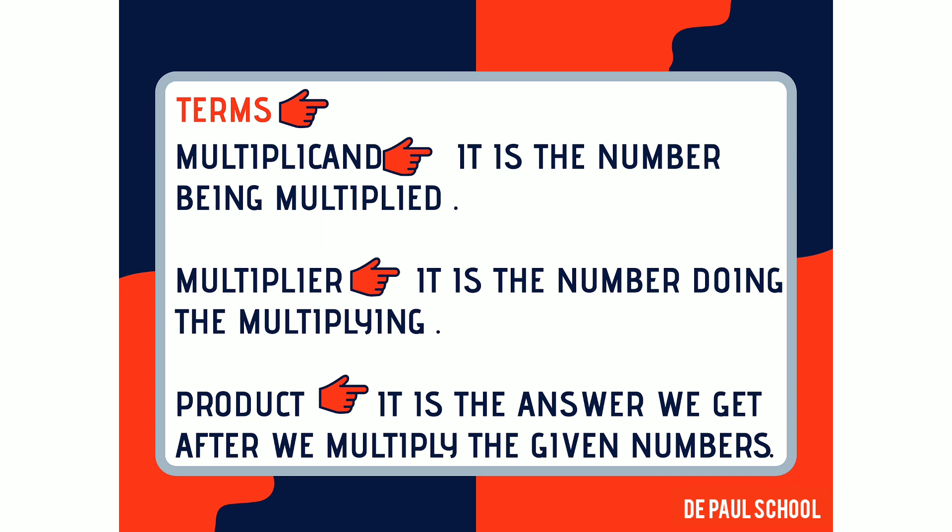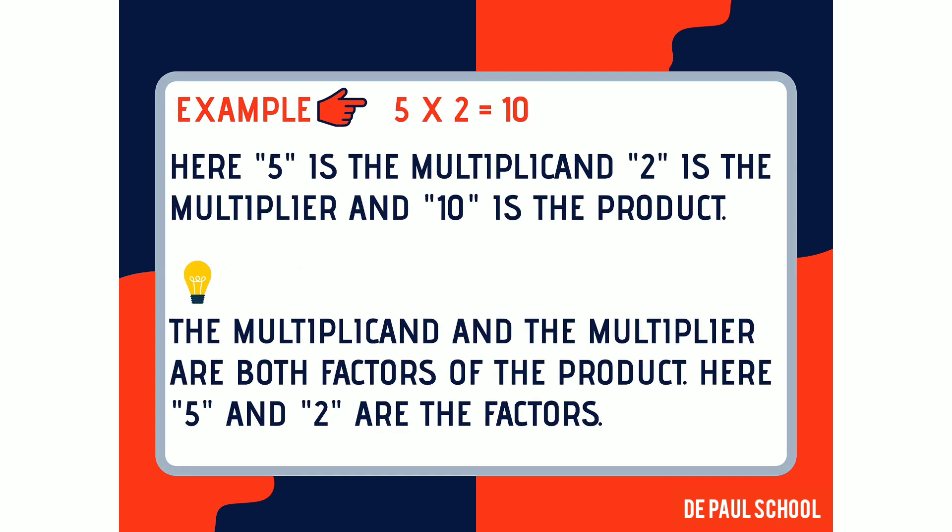Multiplicand is the number being multiplied, multiplier is the number doing the multiplying, and product is the answer which we get after we multiply the given numbers. The multiplicand and the multiplier are both factors of the product. For example, 5 multiplied by 2 is equal to 10. Here 5 is the multiplicand, 2 is the multiplier, and 10 is the product. 5 and 2 are the factors of the product.